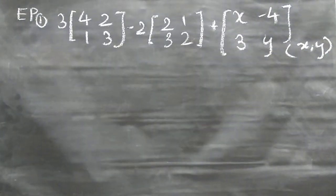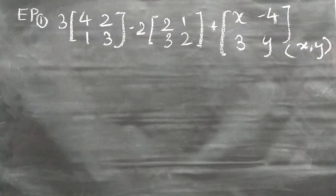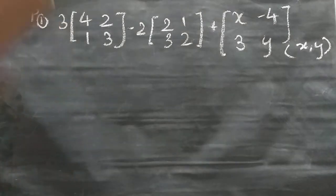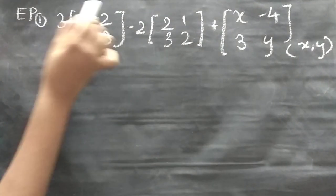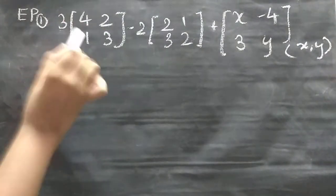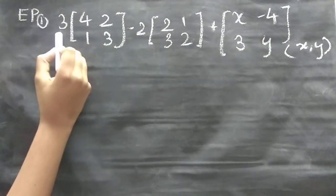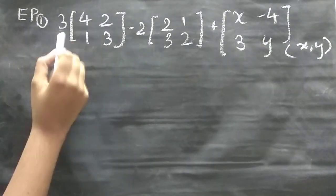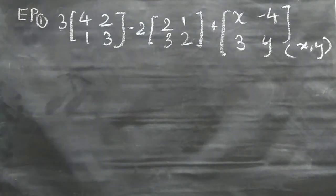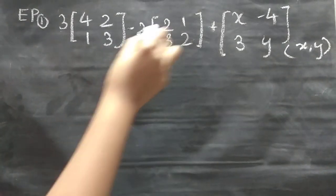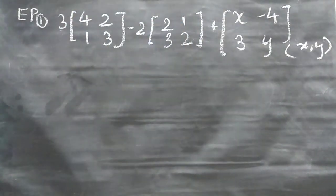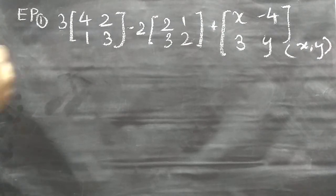Let's get started with the solution. First we should multiply. Since 3 is there, we multiply it with the full matrix: 3×4, 3×2, 3×1, 3×3. And for 2: 2×2, 2×1, 2×3, 2×2. I hope that's clear.